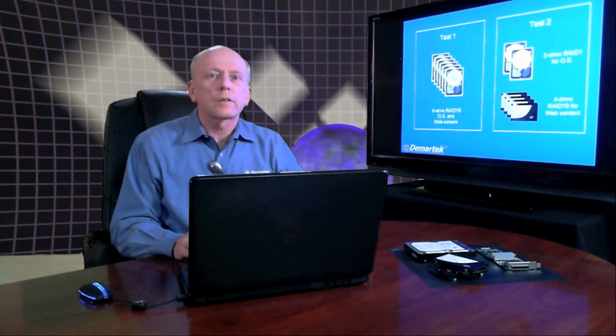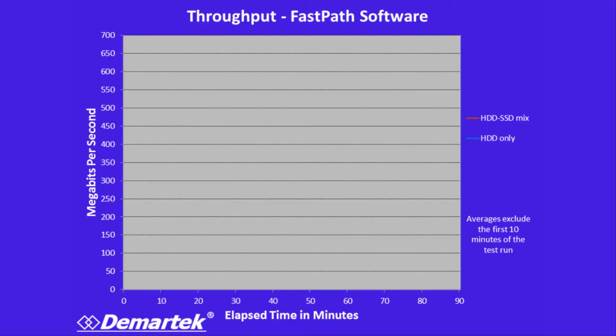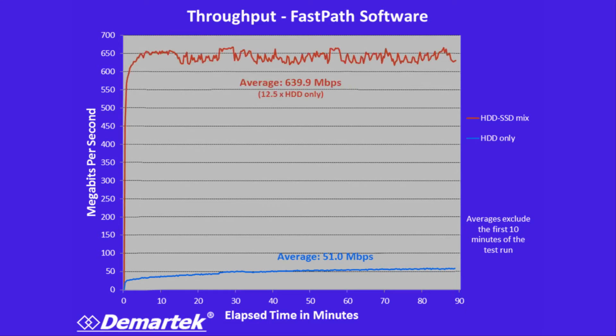So let's take a look at some of the performance and how this worked. First of all, we have throughput. Throughput is a measure of how much data got sent from the web server back to the clients. After we excluded the first sort of 10 minutes of ramp up, we had an average of about 51 megabits per second on the web server in the pure hard drive environment. By switching out to the SSD drives, we got more than 600 megabits per second — an increase of more than 12 times the performance for throughput.